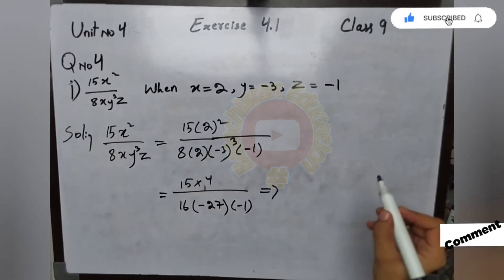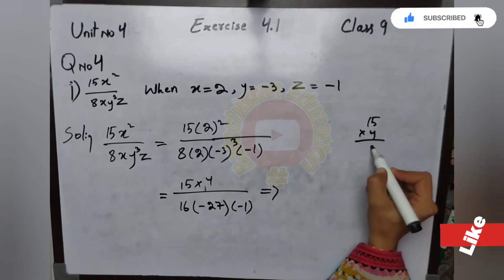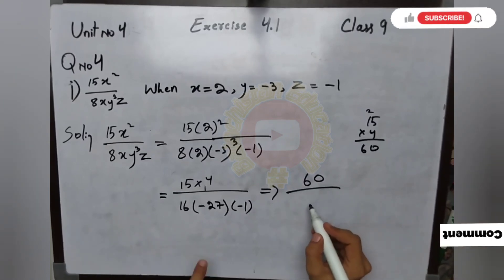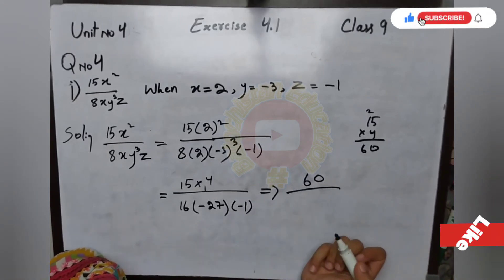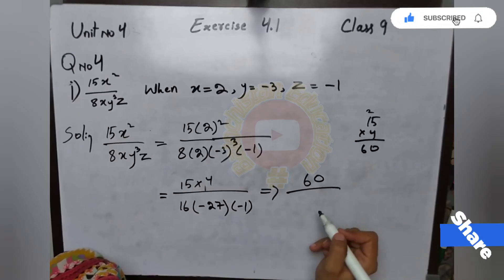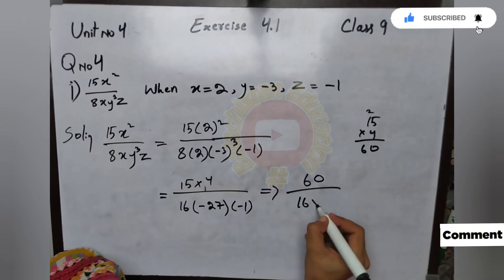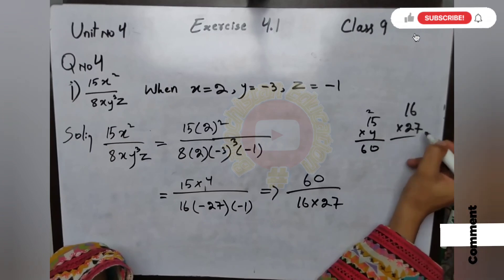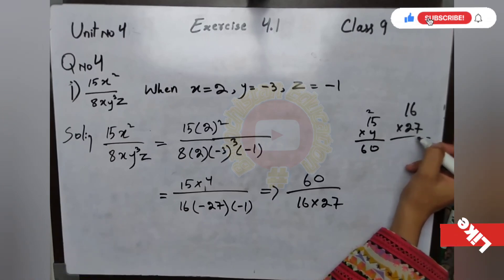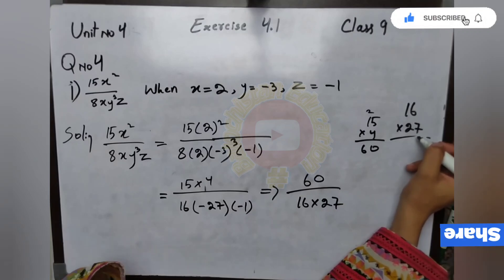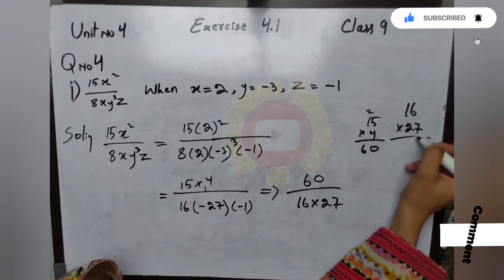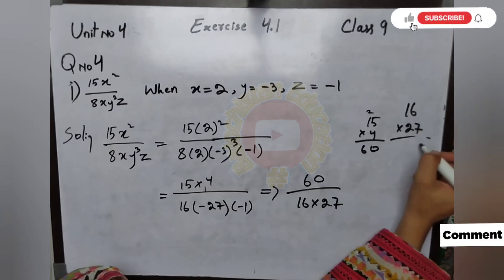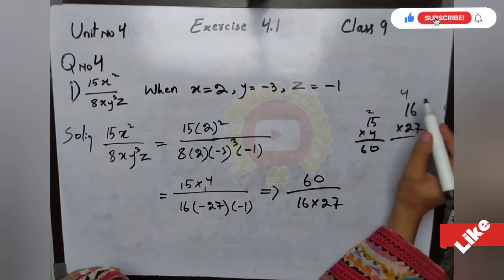Next step: 15 multiplied by 4. 4 times 5 is 20, 1 times 4 plus 2 is 60. Upon 27 multiplied by 1 equals 27. Minus multiplied by minus equals plus. 60 upon 27.